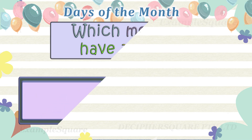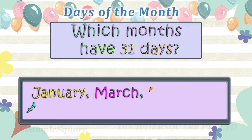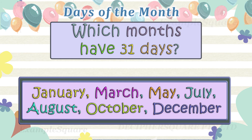Which months have 31 days? January, March, May, July, August, October, and December have 31 days.